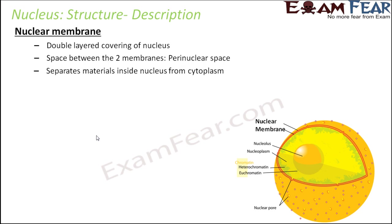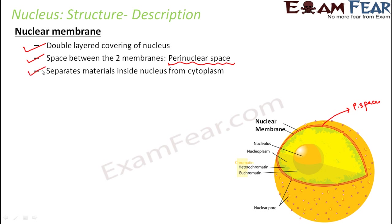Let us start our discussion with nuclear membrane. This is a double-layered covering of the nucleus — so this membrane itself is of two layers. The space between the two membranes is known as the perinuclear space. It separates the materials inside the nucleus from the cytoplasm, keeping the genetic material organized and intact. This nuclear membrane also helps in maintaining the shape of the nucleus. The perinuclear space is composed of lipids and proteins, giving it a lipoprotein structure.